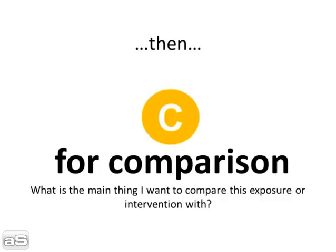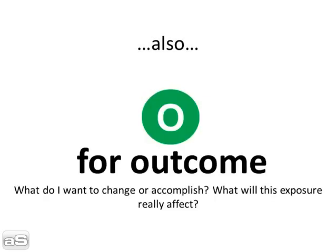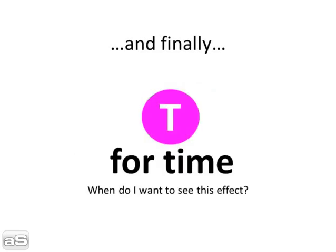C is for comparison — what is the main thing I want to compare this exposure or intervention with? O is for outcome — what do I want to change or accomplish, and what will this exposure really affect? And finally, T is for time — when do I want to see this effect?